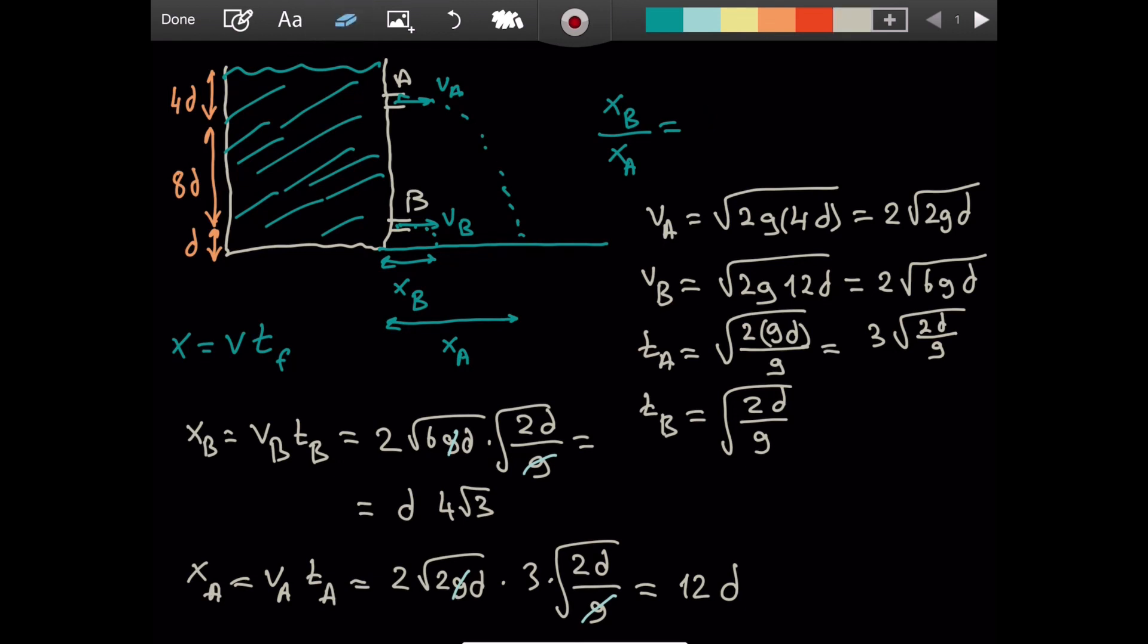So if we return to our question, xB is here: 4 root 3d. And xA is here: 12d. These simplify. Cool. 4 divided by 12 is going to give you 3. So we have root 3 divided by 3. And this is our final answer.